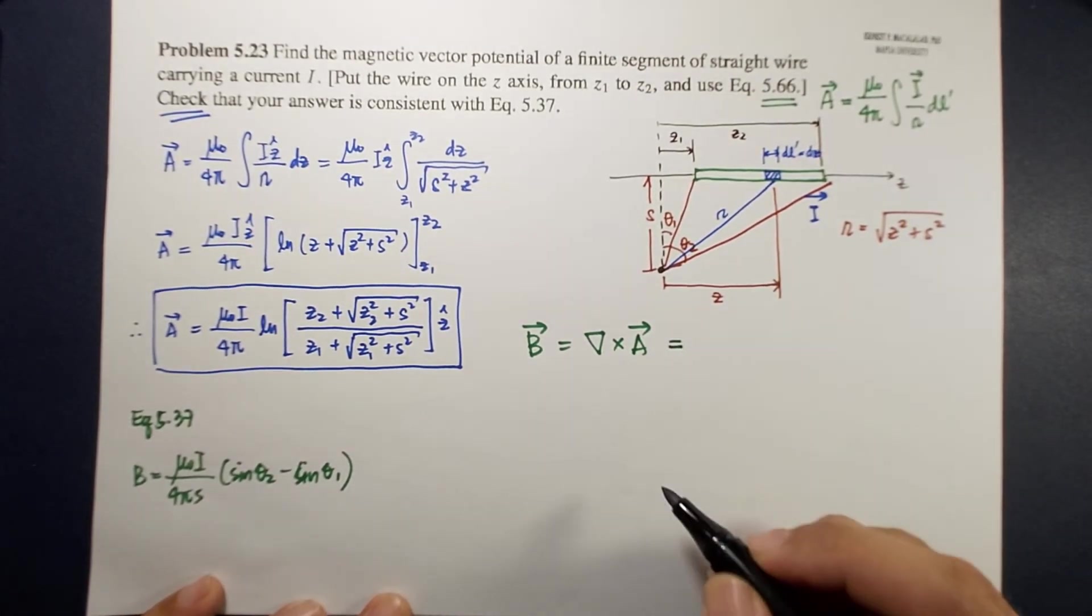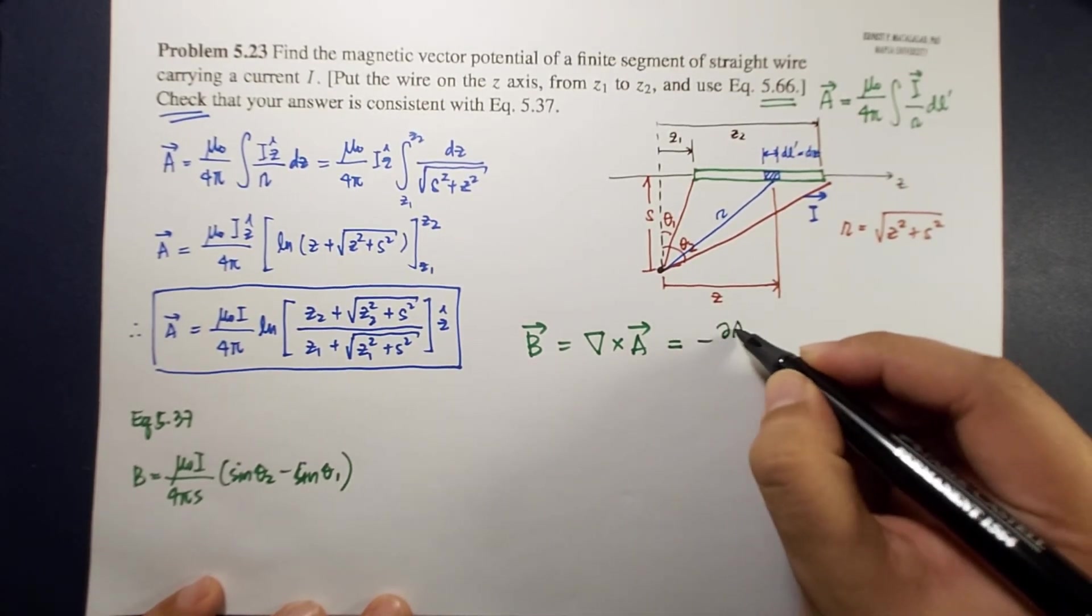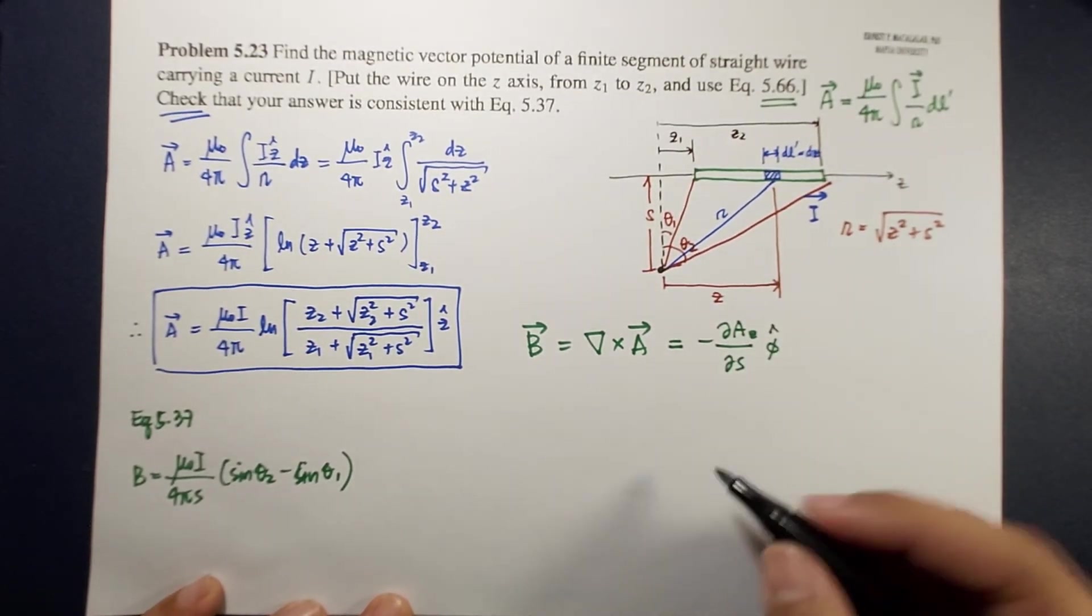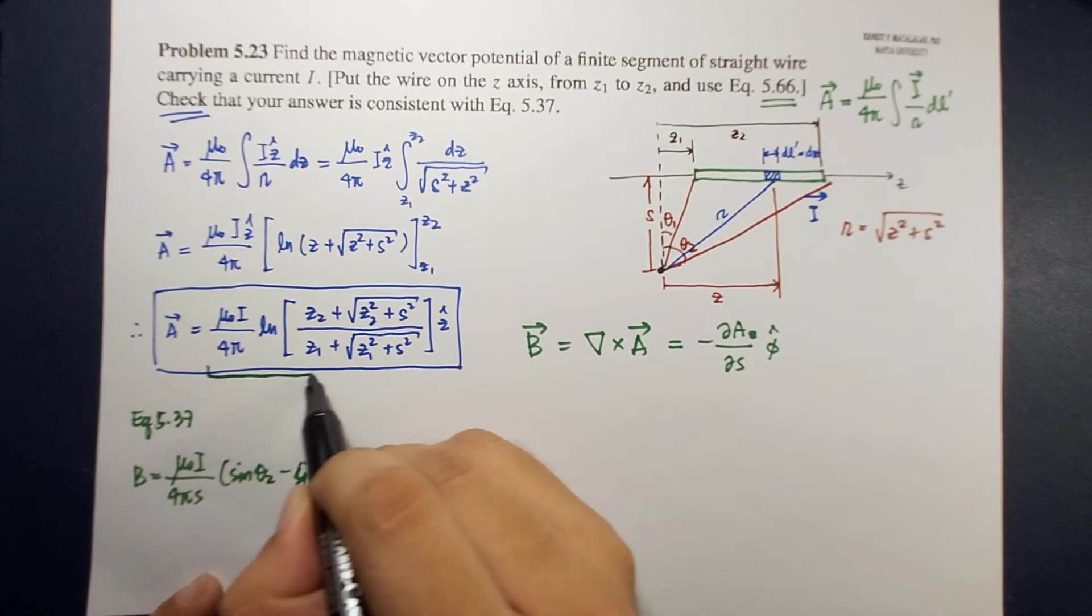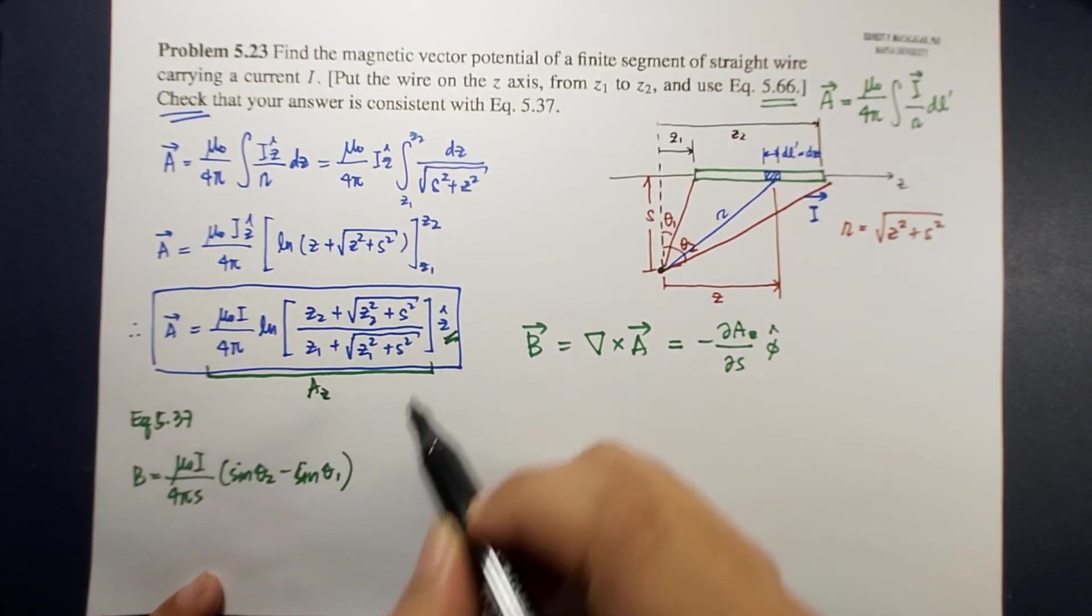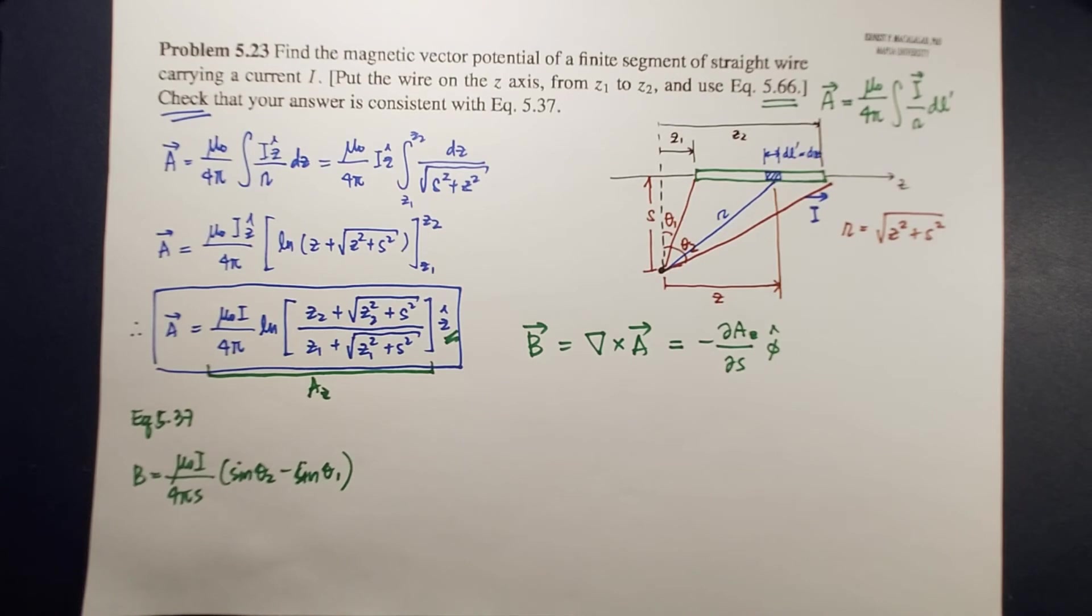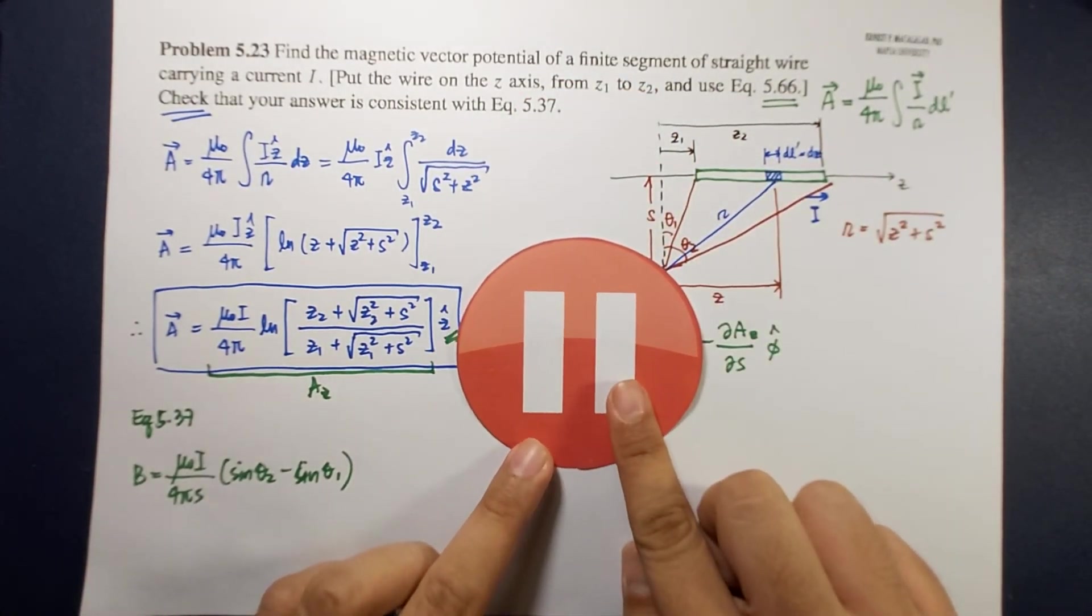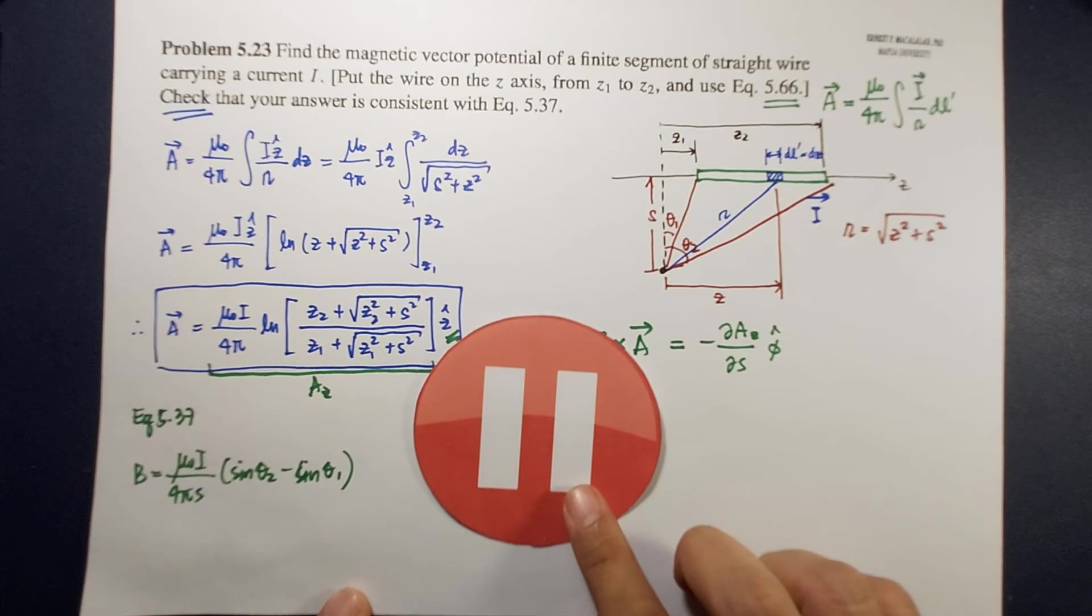Because here as you notice that we're actually using the cylindrical coordinate system, so therefore this curl will now be equal to negative partial derivative of A z with respect to s phi hat. So phi hat is this direction. This A z is this whole thing because this is your z component. So right now I want you to pause this video and try to calculate this.